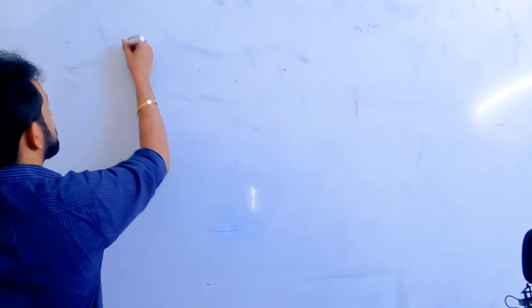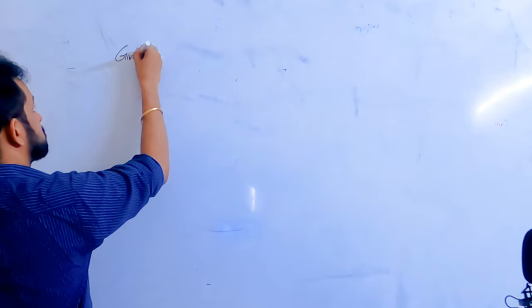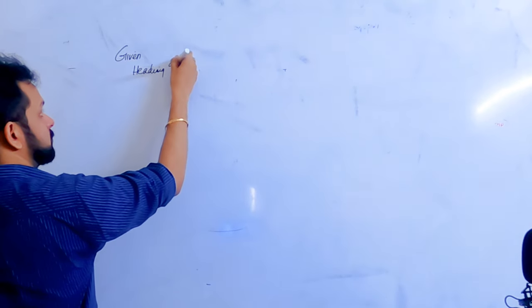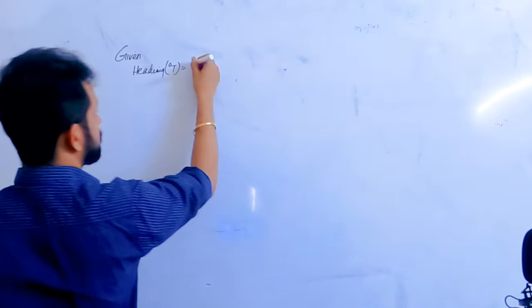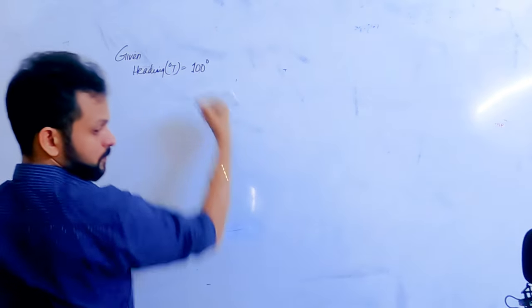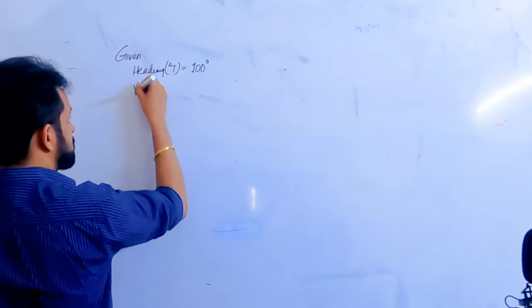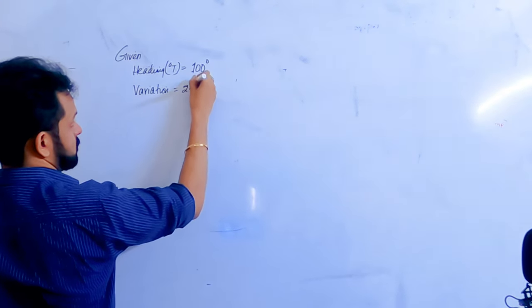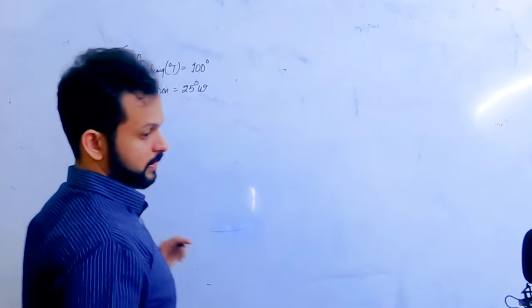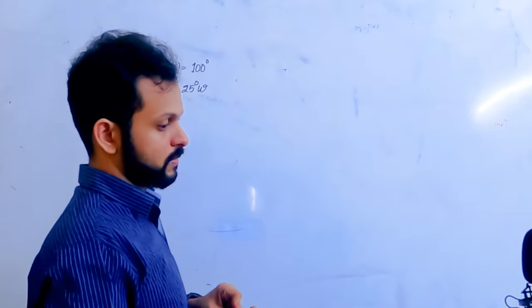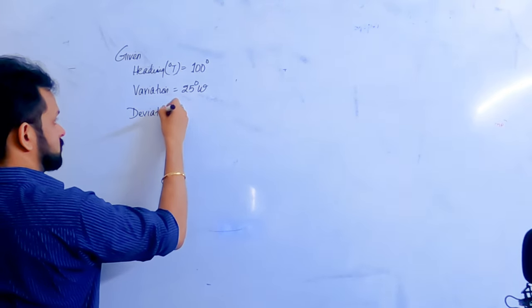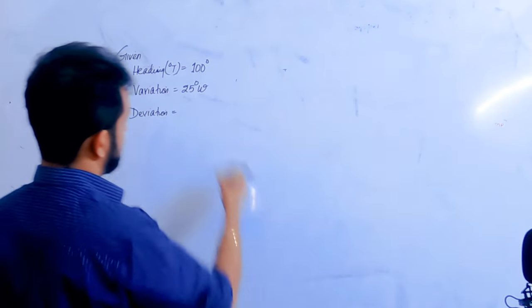Given: True heading is 100 degrees, variation is 25 degrees west, deviation is 10 degrees west.